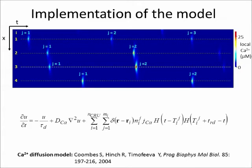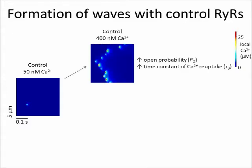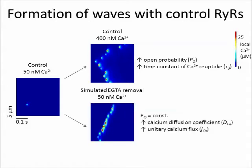Under control conditions at 50 nm cytosolic calcium, the frequency of simulated calcium sparks was very low, in accordance with experimental data. Increase of cytosolic calcium concentration led to an increase of RYR open probability and to an increase of the time constant of calcium reuptake due to saturation of the calcium pump. These changes resulted in formation of calcium waves. A decrease of EGTA concentration, simulated as an increase in calcium diffusion coefficient and in calcium release flux, led to the appearance of calcium waves even at 50 nm cytosolic calcium. Under these conditions, spontaneous calcium sparks, shown as magenta dots, were able to ignite one or more triggered calcium sparks, shown as yellow dots, at the neighboring release sites. These data are in agreement with experimental observations.